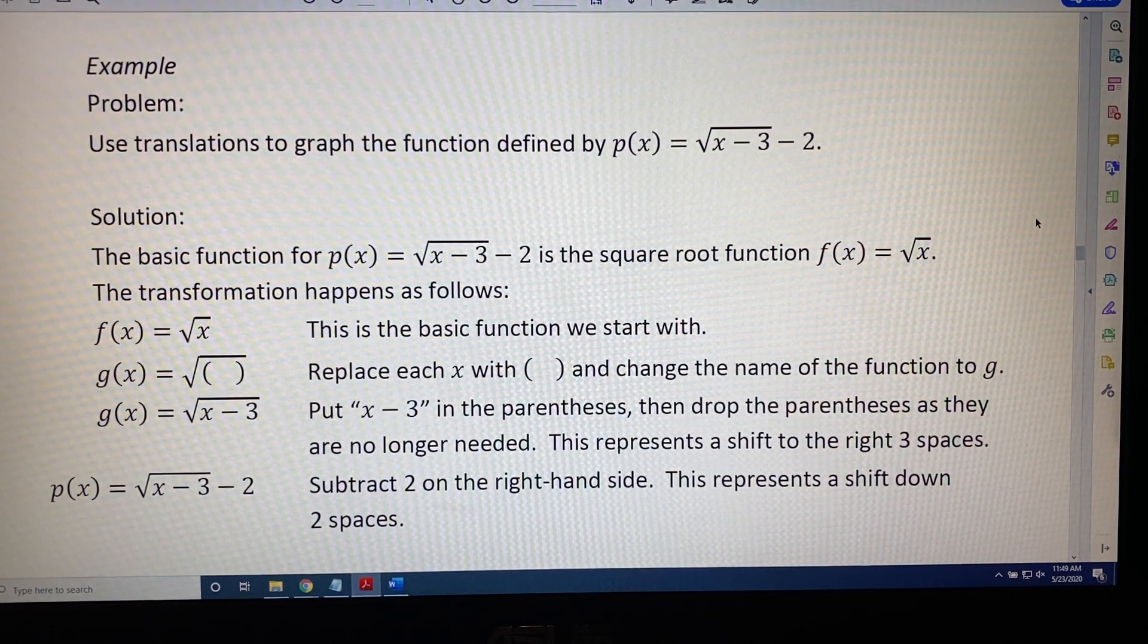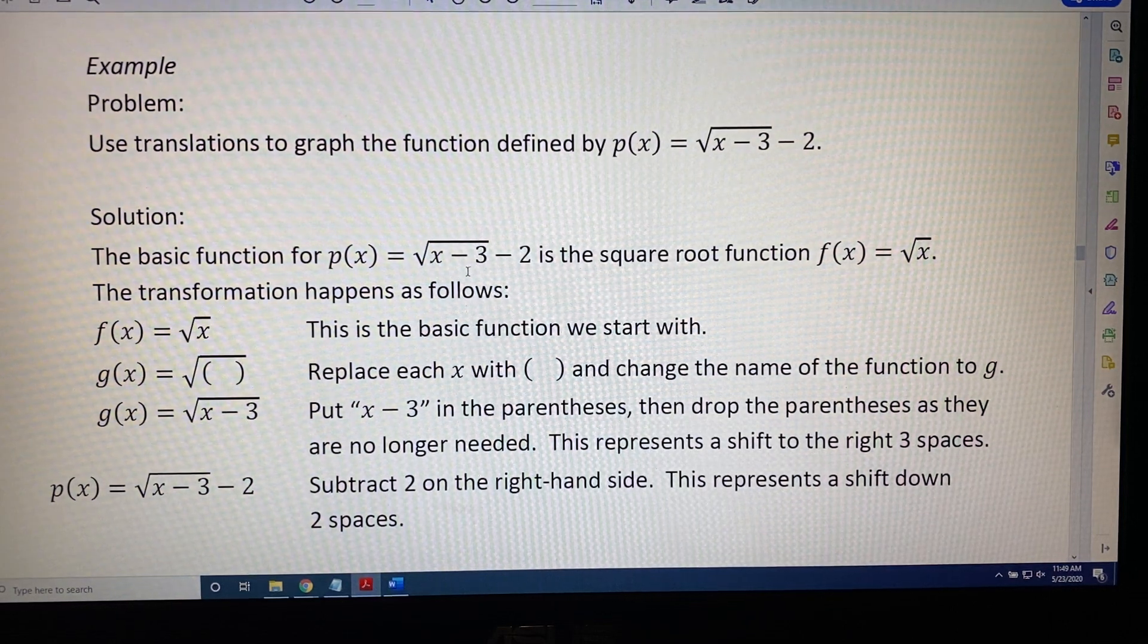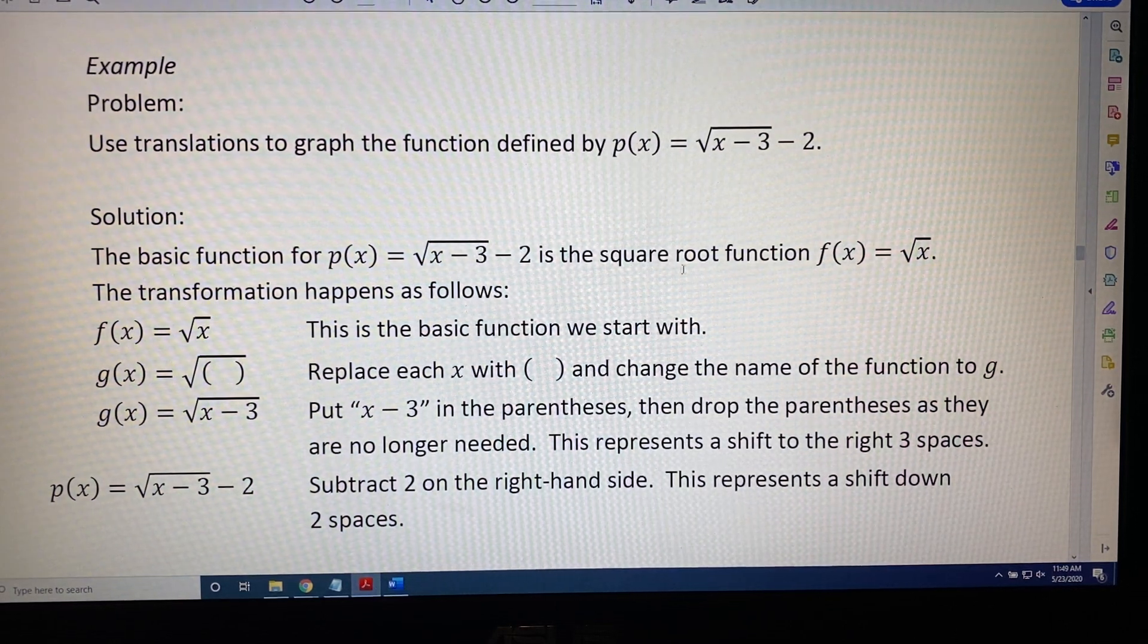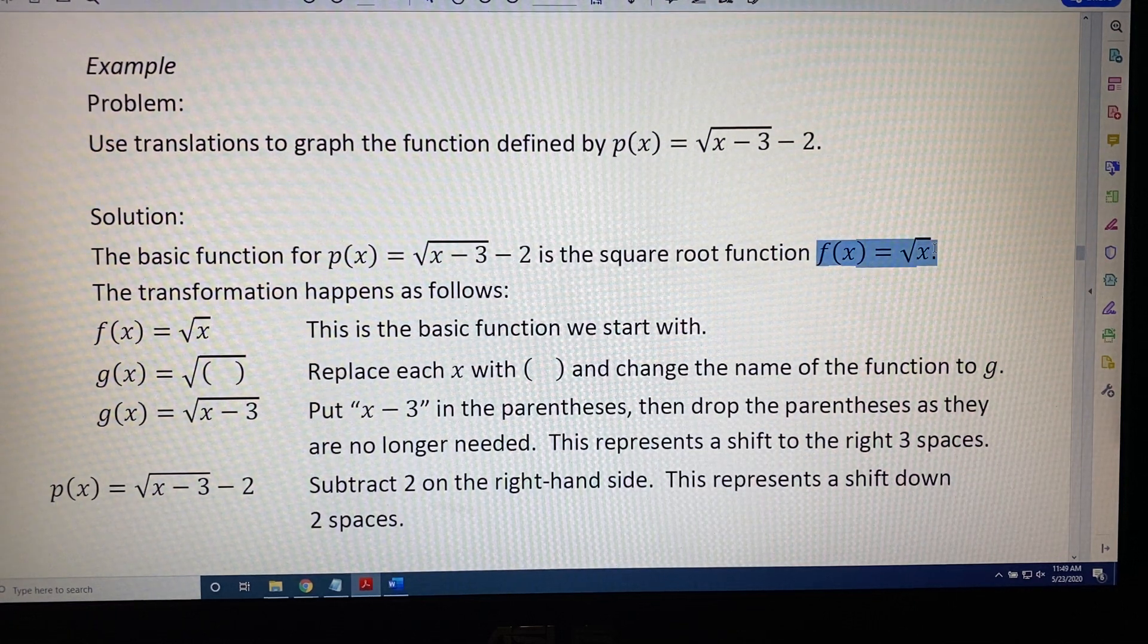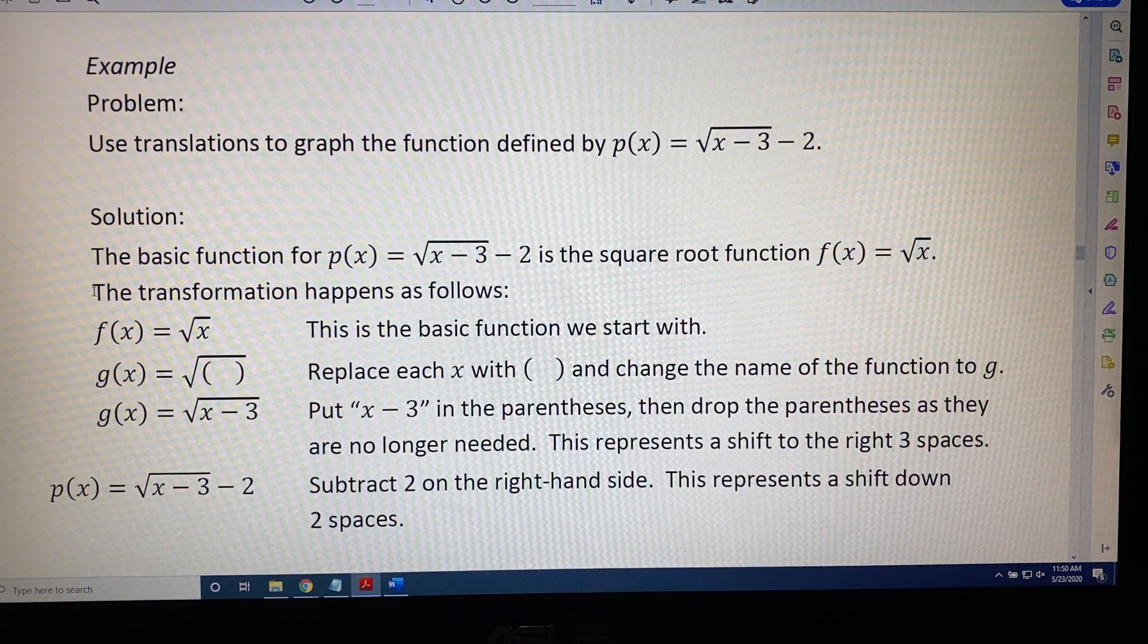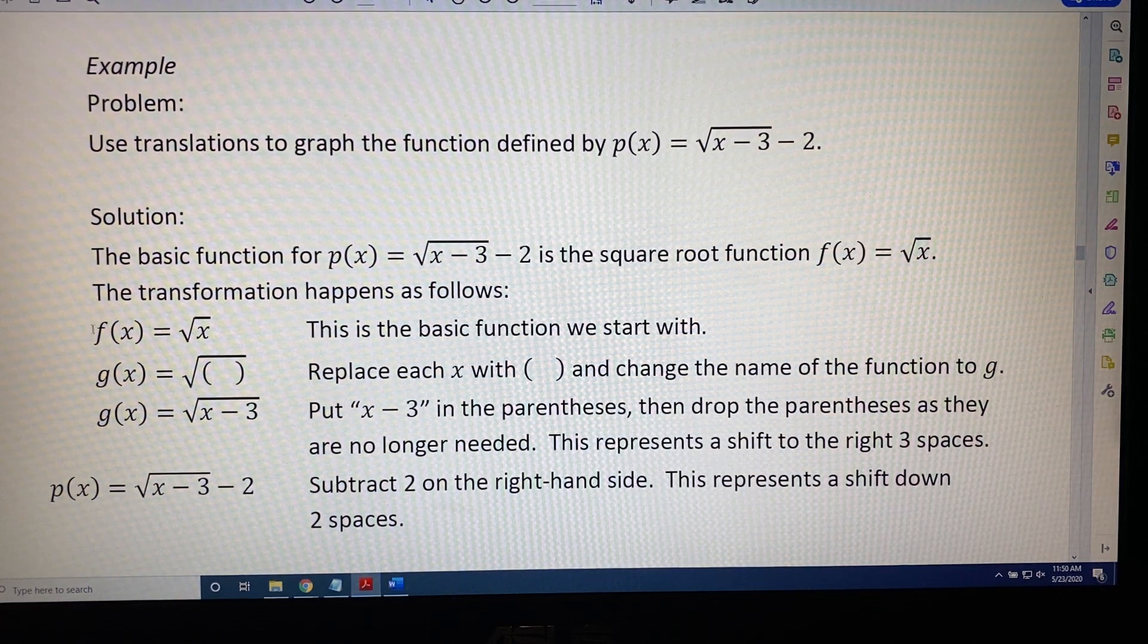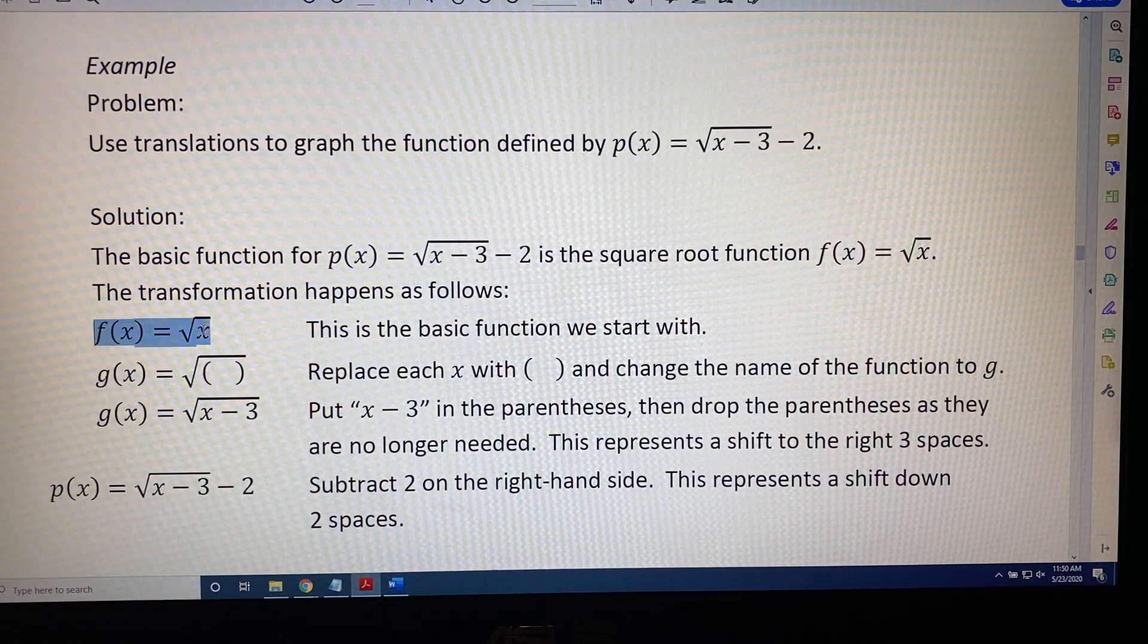Solution. The basic function for p(x) equals the square root of (x minus 3) minus 2 is the square root function. It's the function that most closely resembles the function that we have been provided with. The transformation happens as follows. We start with the square root function, f(x) equals the square root of x.